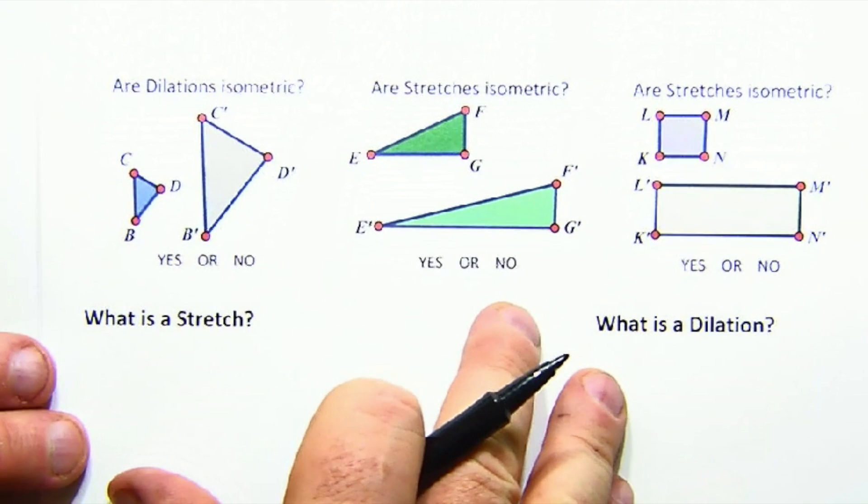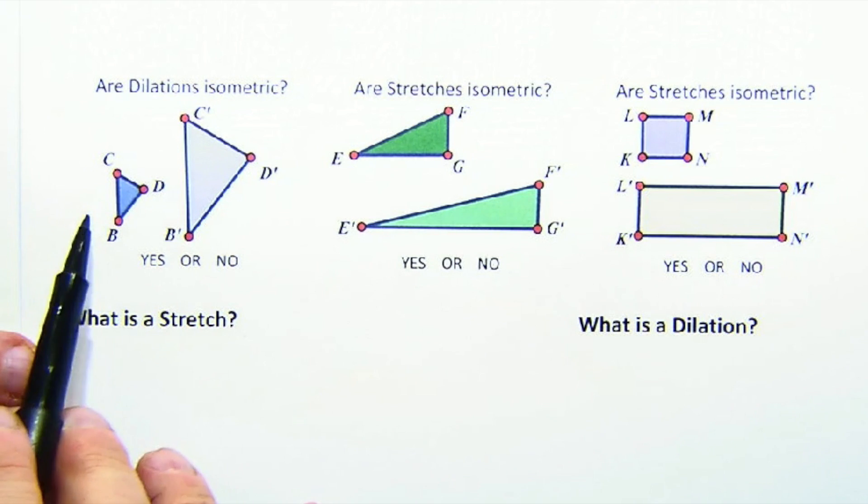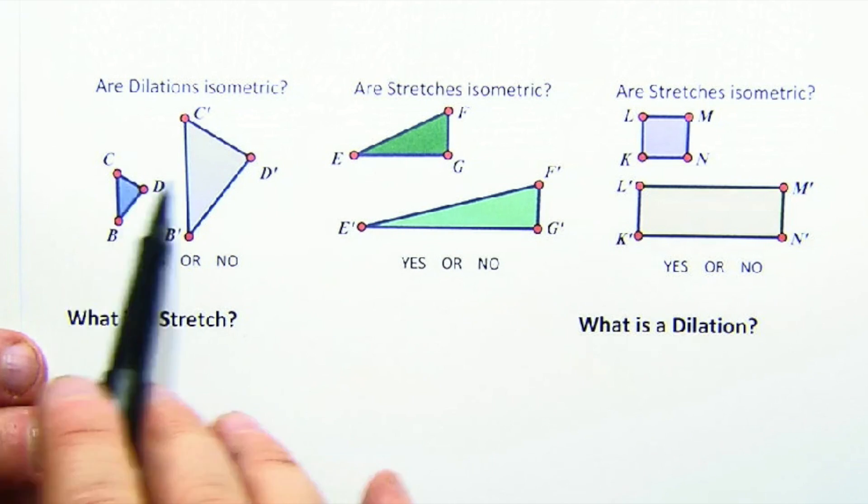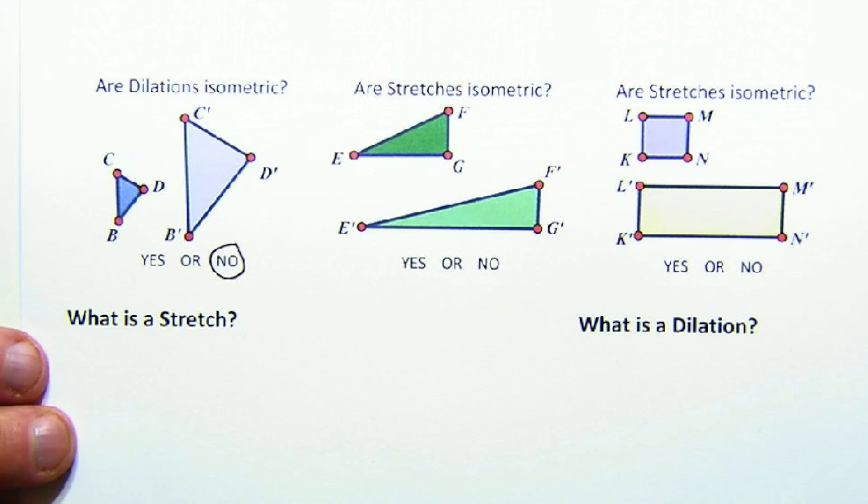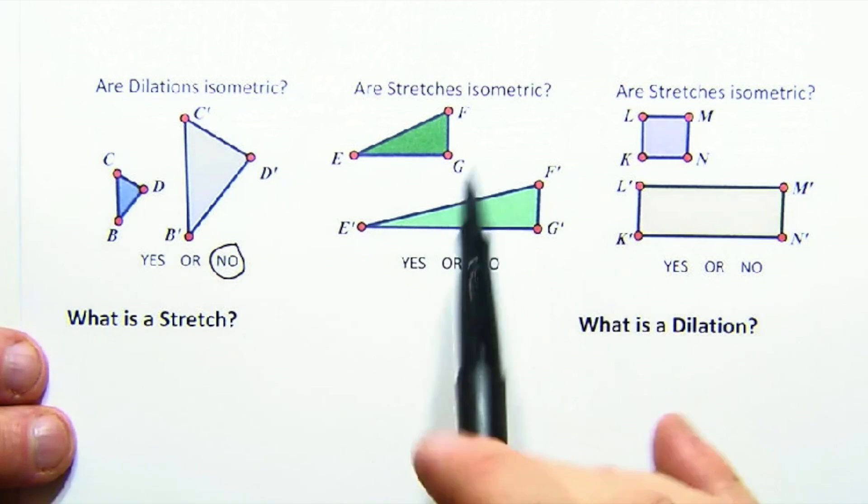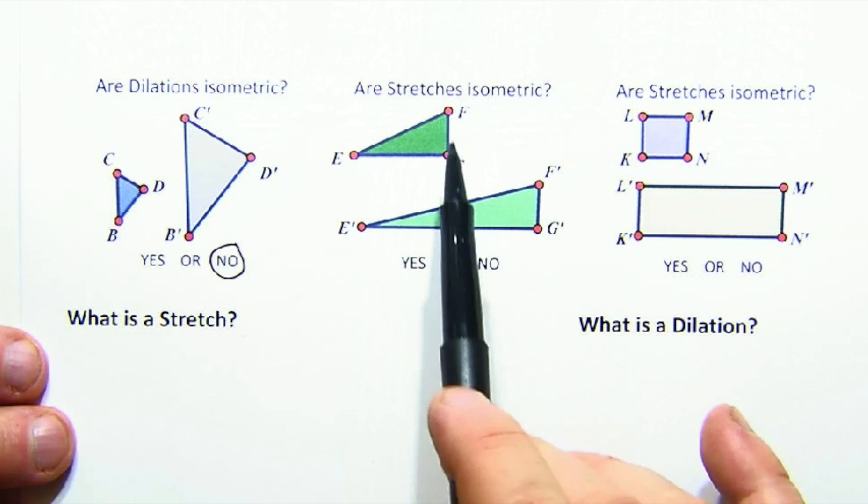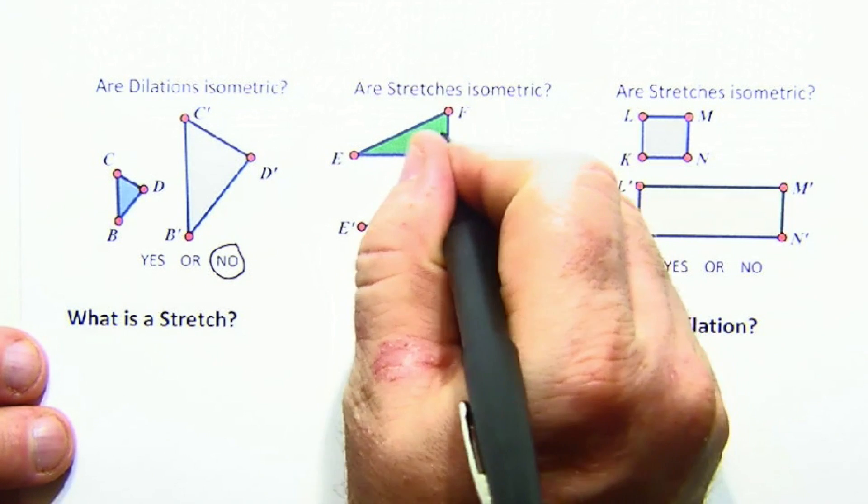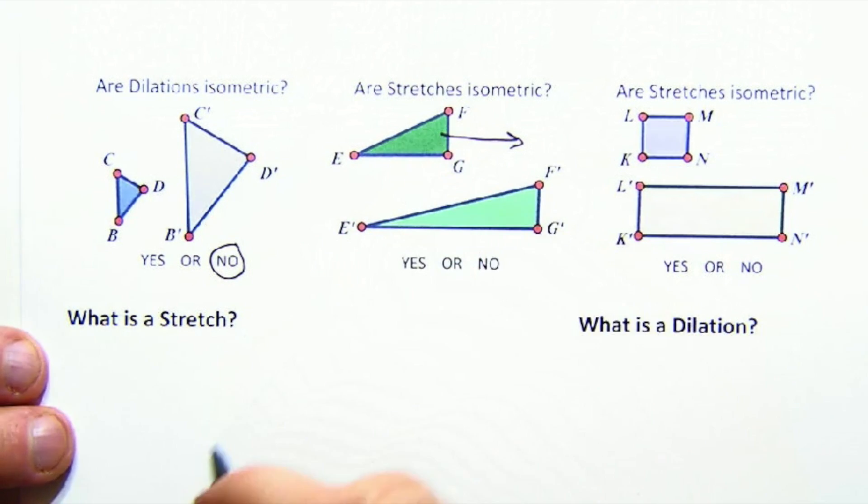When we look at dilations though and stretches, we notice that that is not the case. Here's a small triangle that's been mapped to a larger triangle. The shape is the same but the sizes are not, so a dilation is not isometric. Here a stretch is to basically change the dimensions non-proportionally. So we kept the height the same but we grabbed this and pulled it sideways, and of course these are not isometric.